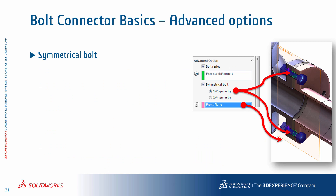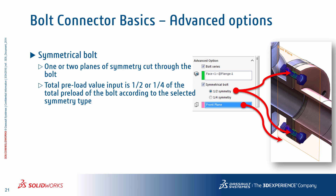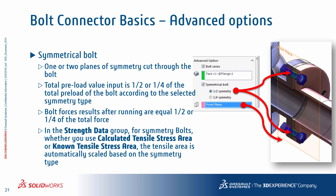Another advanced option is the symmetrical bolt option. You can analyze one-quarter or one-half geometry of your bolted assembly for simulation purposes, which reduces meshing and simulation solve times. If the planes of symmetry cut through the actual bolts, the symmetrical bolt option can be used in the bolt connector definition. Keep in mind that the input preload value should be the total preload of the full bolt divided by the number of symmetry planes used. Similarly, the reported bolt force results will be either one-half or one-quarter of the total force on the bolt. If strength data is used along with the symmetry option, the program automatically scales the tensile stress area based on the symmetry type chosen.